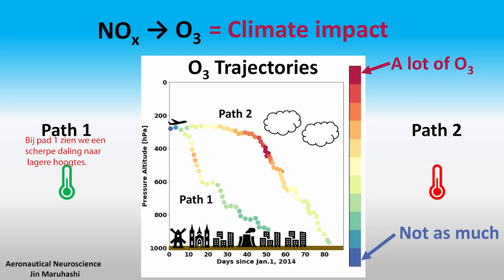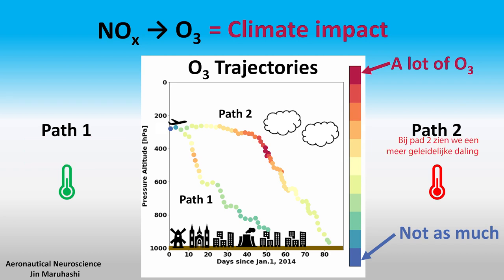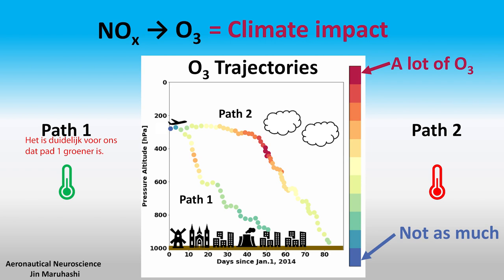In the first path, we see that there's a sharp descent to lower altitudes, where ozone is removed far more rapidly. In the second path, we see a more gradual descent, which leads to more efficient ozone accumulation at higher altitudes. So it's clear that path one is the green alternative, and not so much path two.